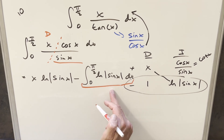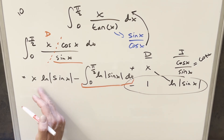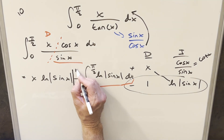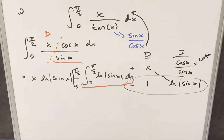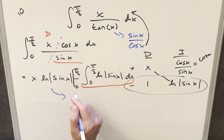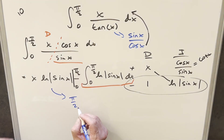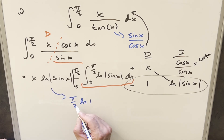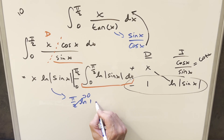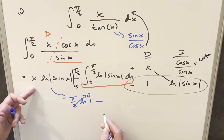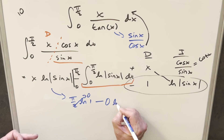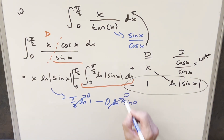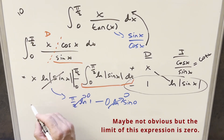There are going to be a few steps — it's not simple, but we can definitely do this one. First, let's evaluate the boundary term x·ln|sin(x)| from 0 to π/2. Plugging in π/2: we get π/2 times ln(sin(π/2)) = ln(1) = 0, so that piece is 0. Plugging in 0: we get 0 times ln(sin(0)), and this is also going to 0. So the whole boundary piece goes away.